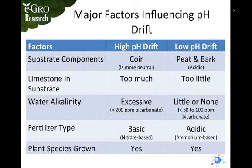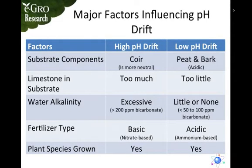Regarding alkalinity, if you get above 200 parts per million bicarbonate, you will see pH creeping up over time — that's especially the case in the Midwest and Great Plains. If you have little or no alkalinity, you're susceptible to pH drop. Of course, basic fertilizers will help increase pH, and acidic fertilizers will make it go down. There is also a species effect that can influence pH going either direction.